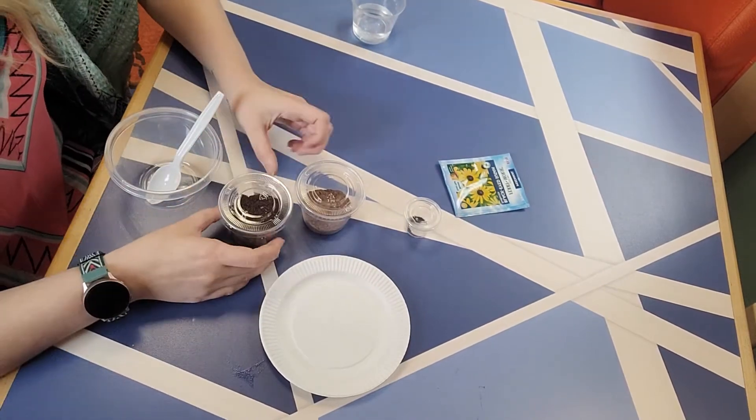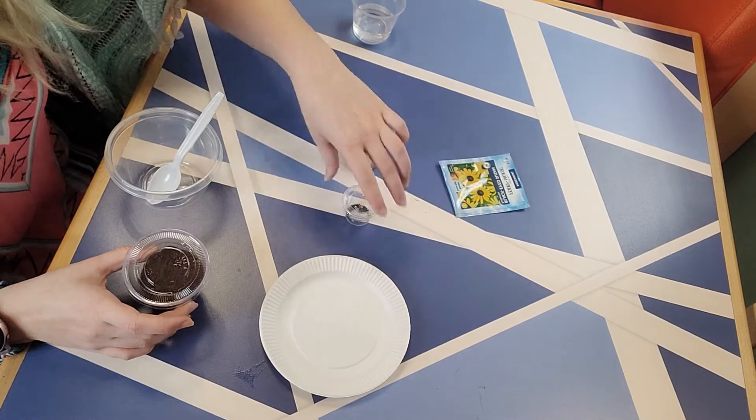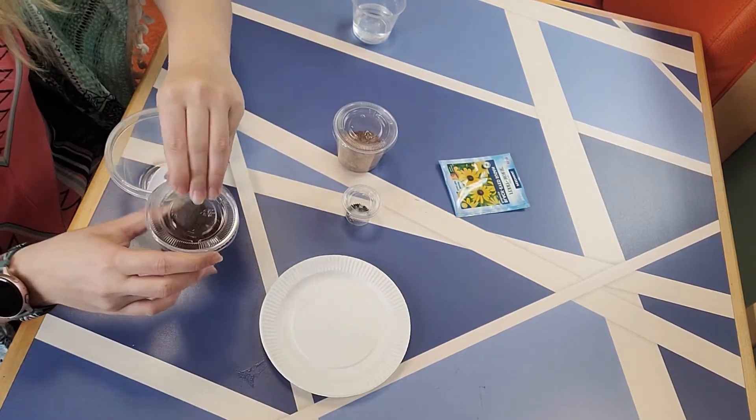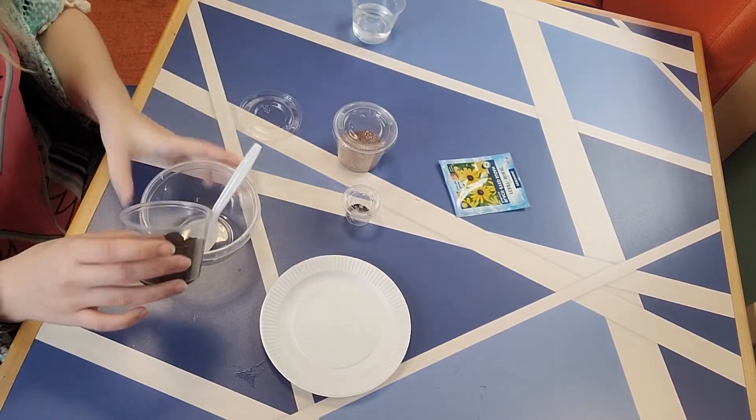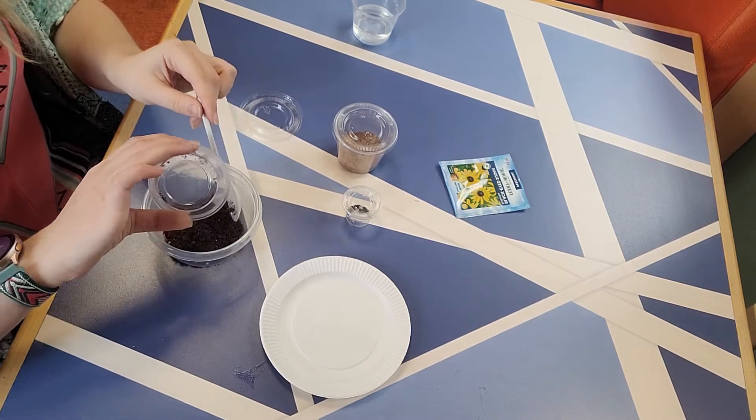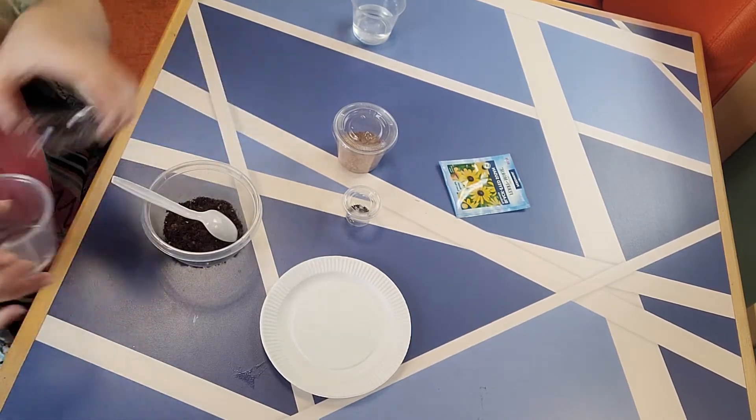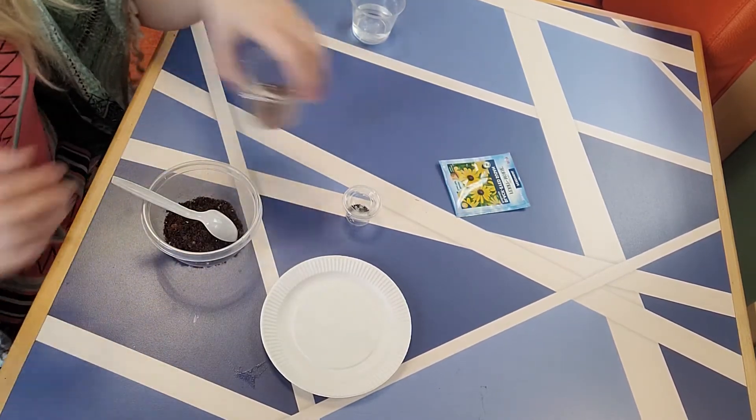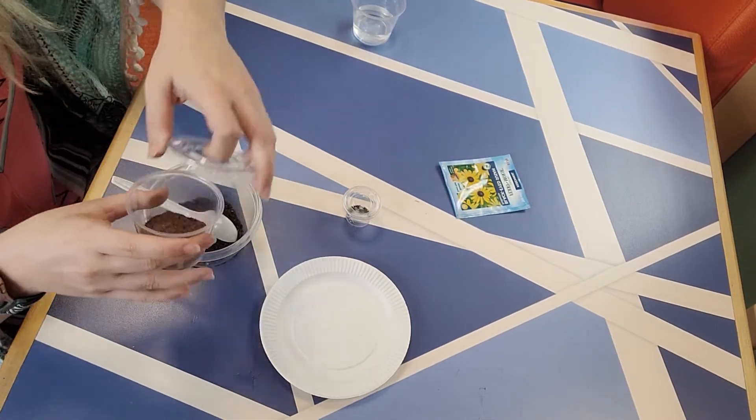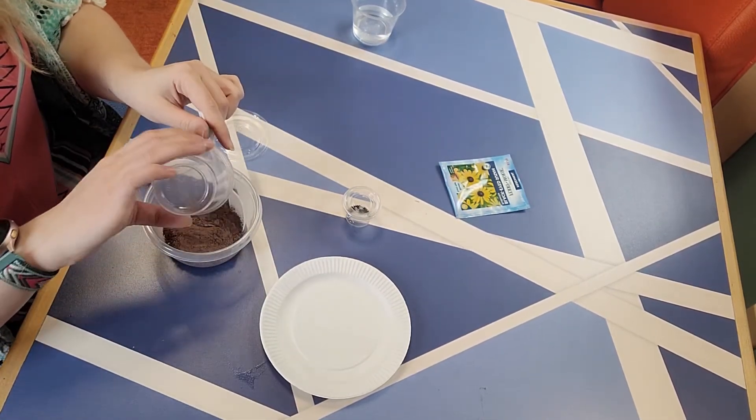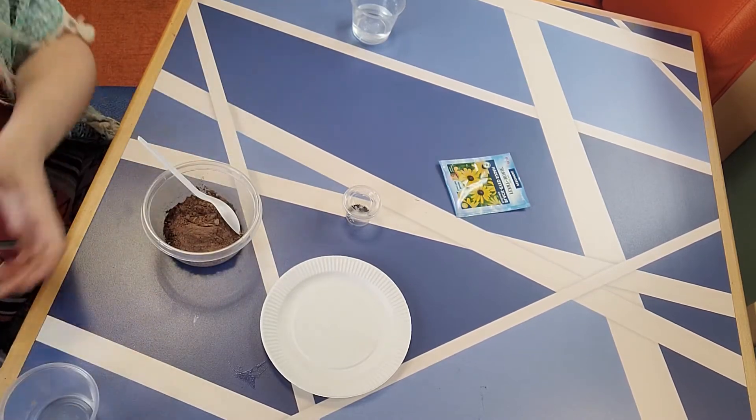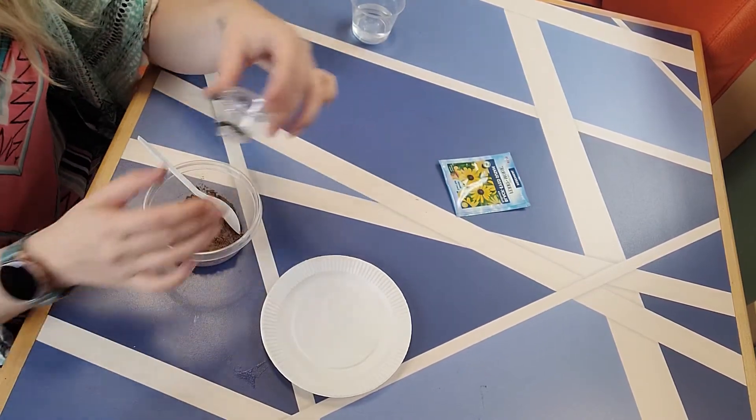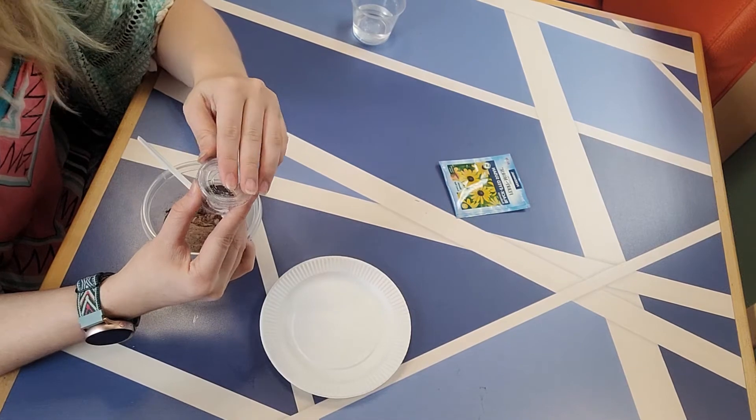Okay. So let's get it started. So the first thing I'm going to do is get my soil in here. Next thing I'm going to do is pour in my clay powder. And then last, I am going to pour in my seeds.